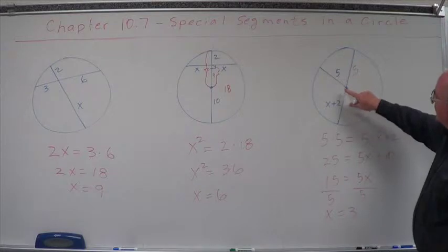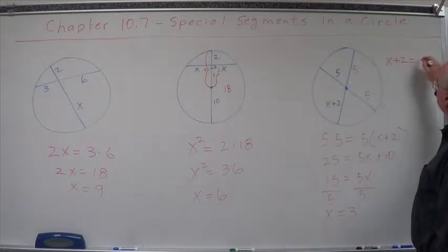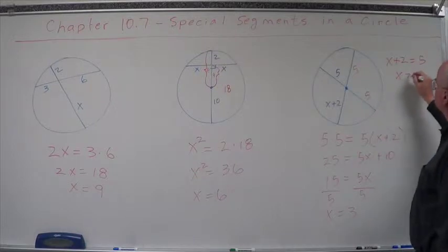So therefore, this radii must have the same measure as this radii. We can just simply say x plus 2 equals 5, x equals 3.